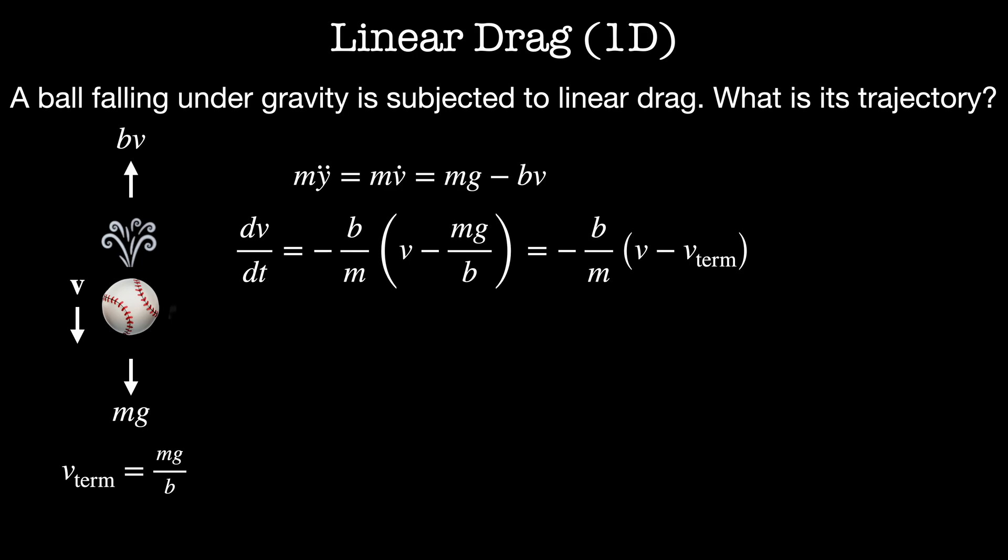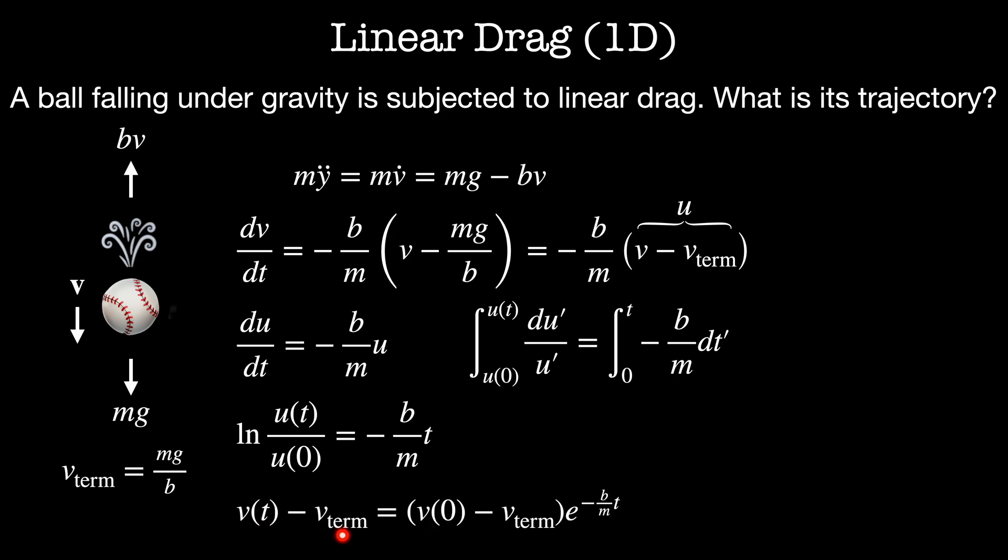Let me do a quick change of variables to make this a little easier to solve. Let me call this term here u. Now my differential equation is du by dt is equal to minus b over m times u. Let's collect terms and integrate. I end up with the integral from u at time 0 to u at time t of du prime divided by u prime is equal to the integral from 0 to t of minus b over m times dt prime. Integrating this gives the natural log of u of t divided by u of 0 equals minus b over m times t. I can take the exponential of this and plug back in for the velocities and I get vt minus v terminal is equal to v at time 0 minus v terminal times e to the minus b over m times t.